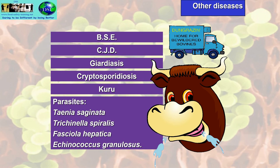Other parasites include Taenia saginata, found in beef, and Trichinella spiralis, which is common in pork. Never eat undercooked pork. You can eat undercooked beef steaks, game and lamb steaks as long as they come from a single joint or single muscle; if the meat is minced or cut in any form, it must be cooked to at least 63–75°C. Trichinella spiralis is found in pork, bear meat and horse meat — undercooking infected meat can cause heart attacks and death.